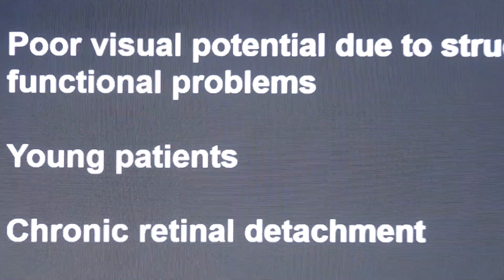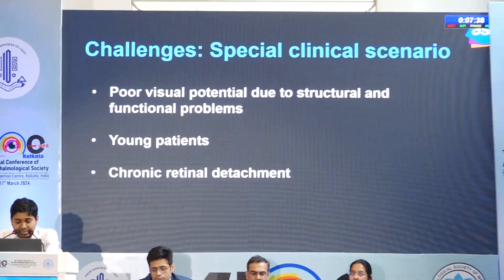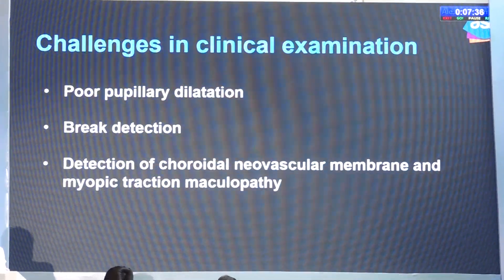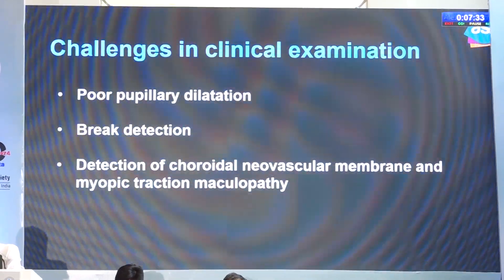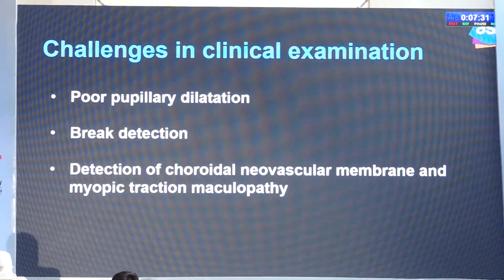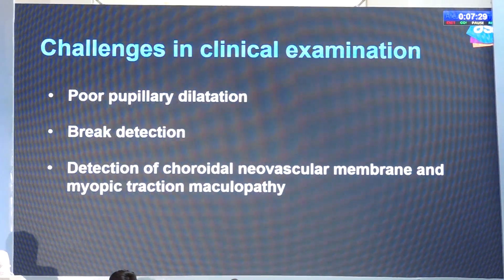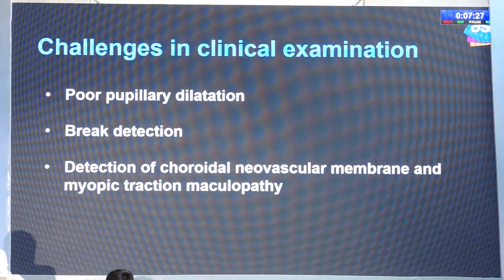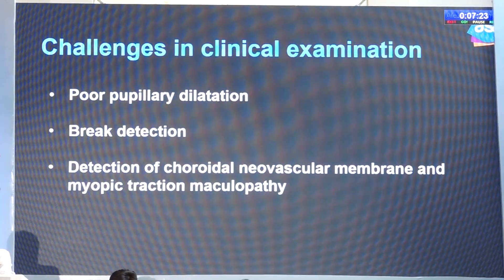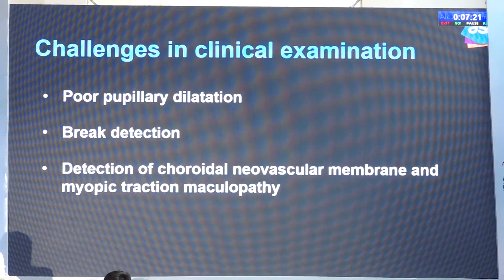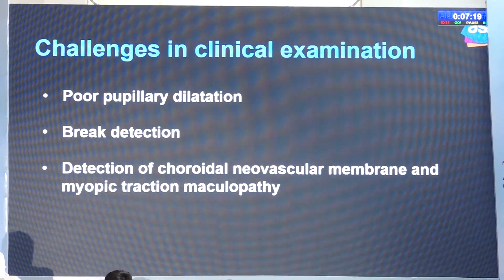Visual prognosis can be limited because of structural and functional problems. Many of these are young patients and some cases have really thin retina with chronic retinal detachment. The pupil might not dilate well, and because contrast is poor, break detection might be difficult. Myopic CNVMs can be very difficult to see and myopic traction maculopathy is also very difficult to detect clinically unless you do an OCT.